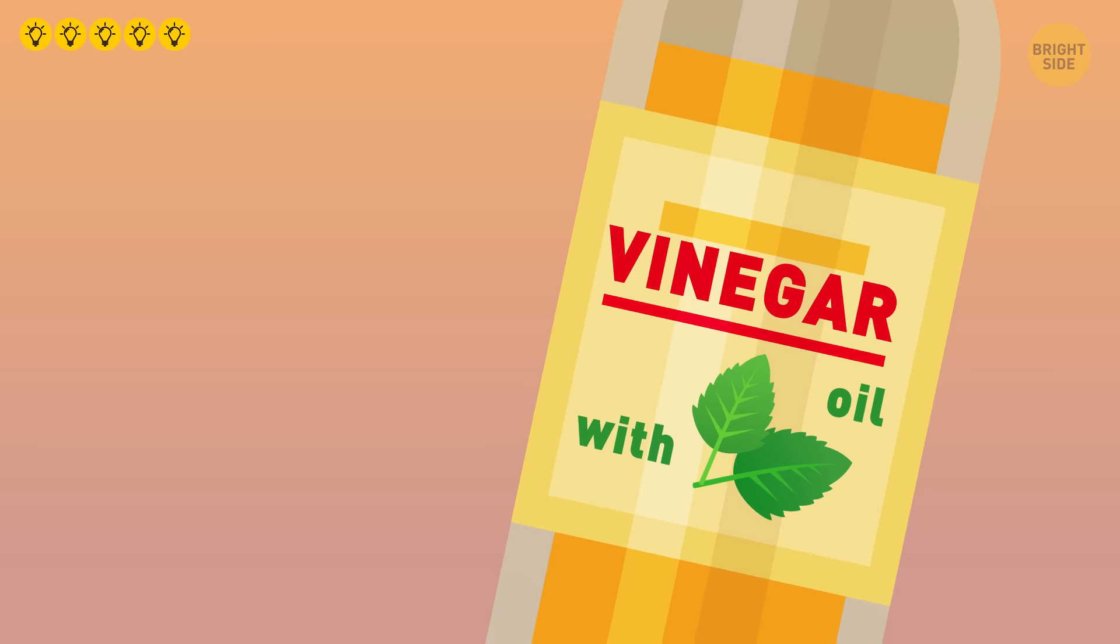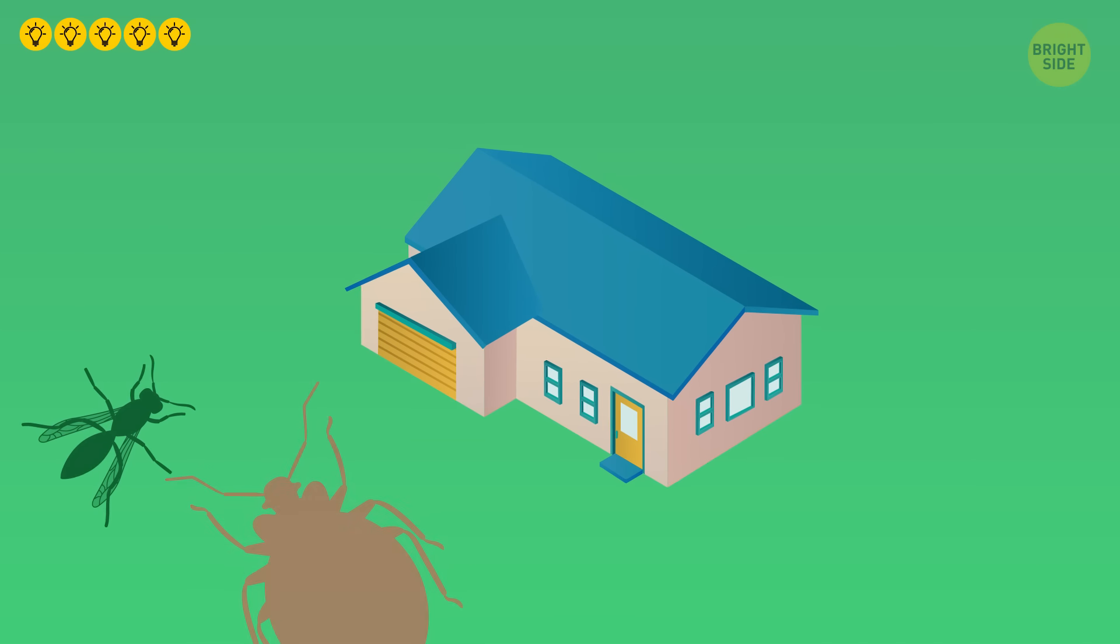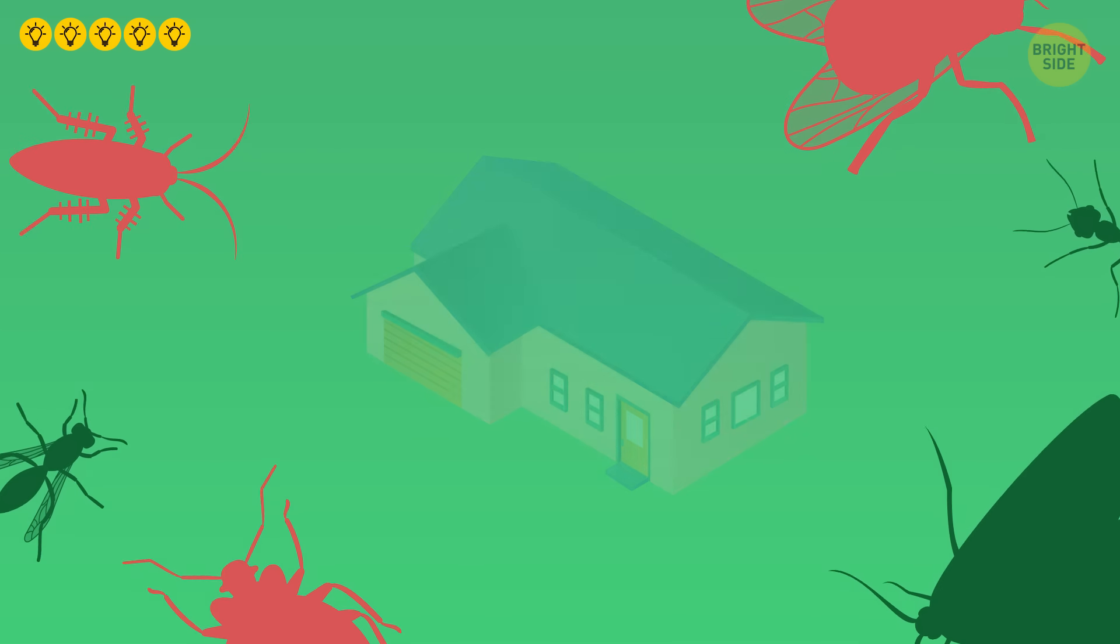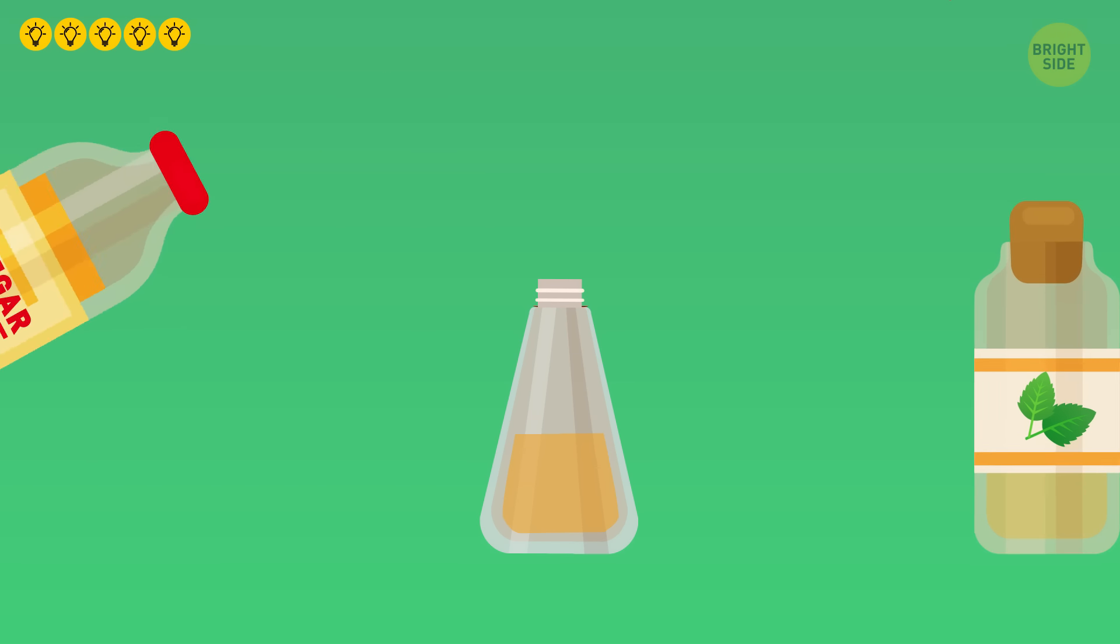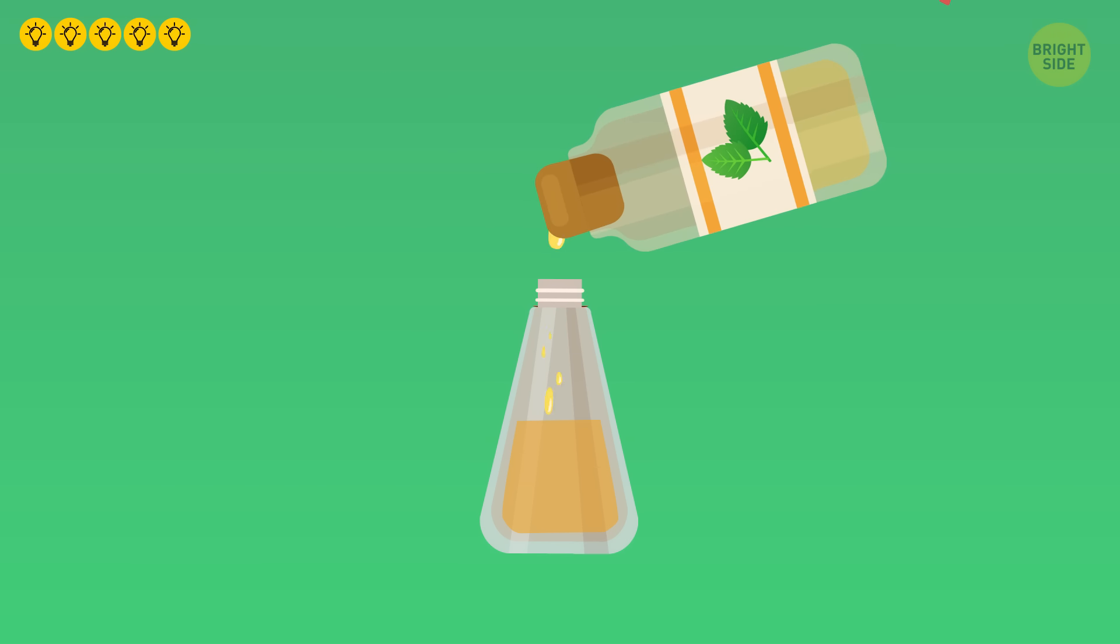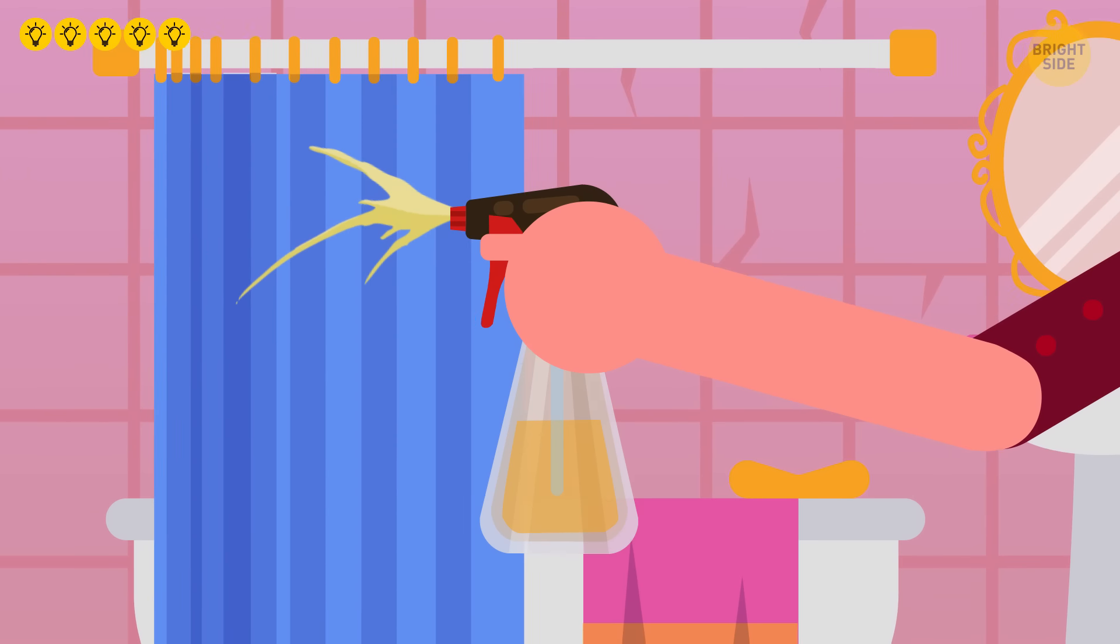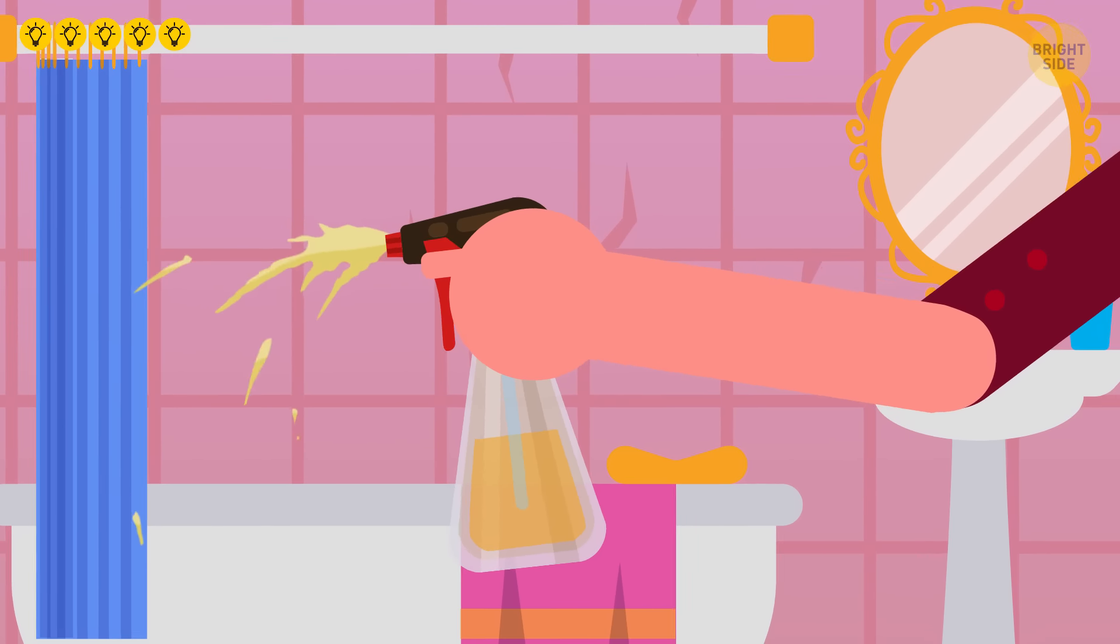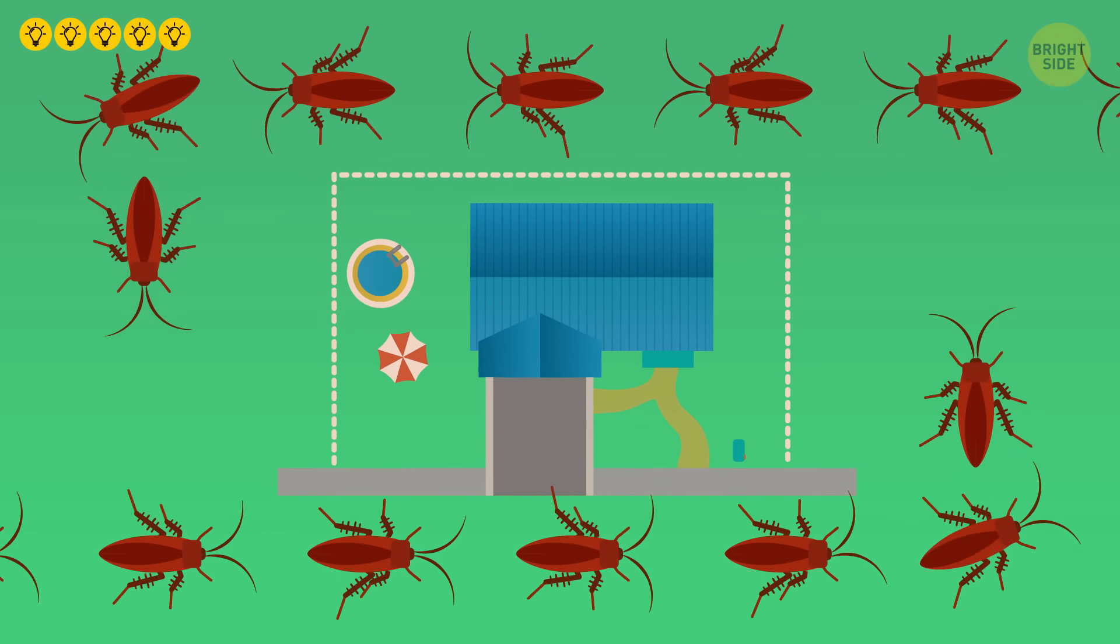Vinegar with peppermint oil. Lots of insects can't stand these two smells, roaches included. Just fill a medium-sized spray bottle with mostly vinegar and add enough drops of peppermint essential oil so that you can smell it. Give it a shake and get to spraying. Target your kitchen and bathroom. Get the corners of your floors, all the nooks and crannies, and roaches won't come anywhere near your house.